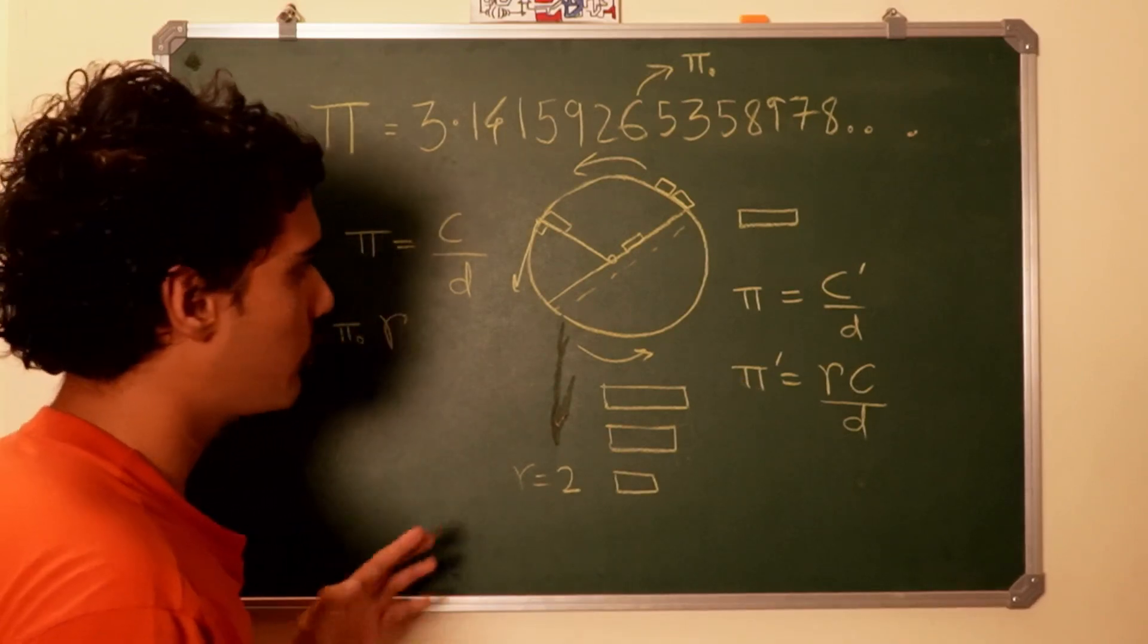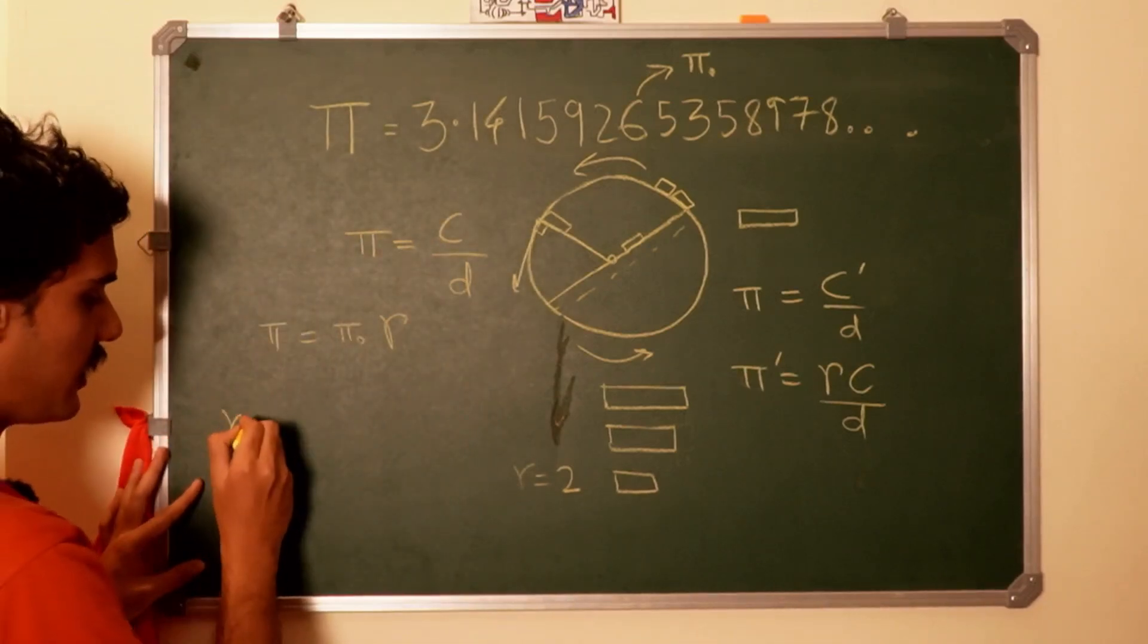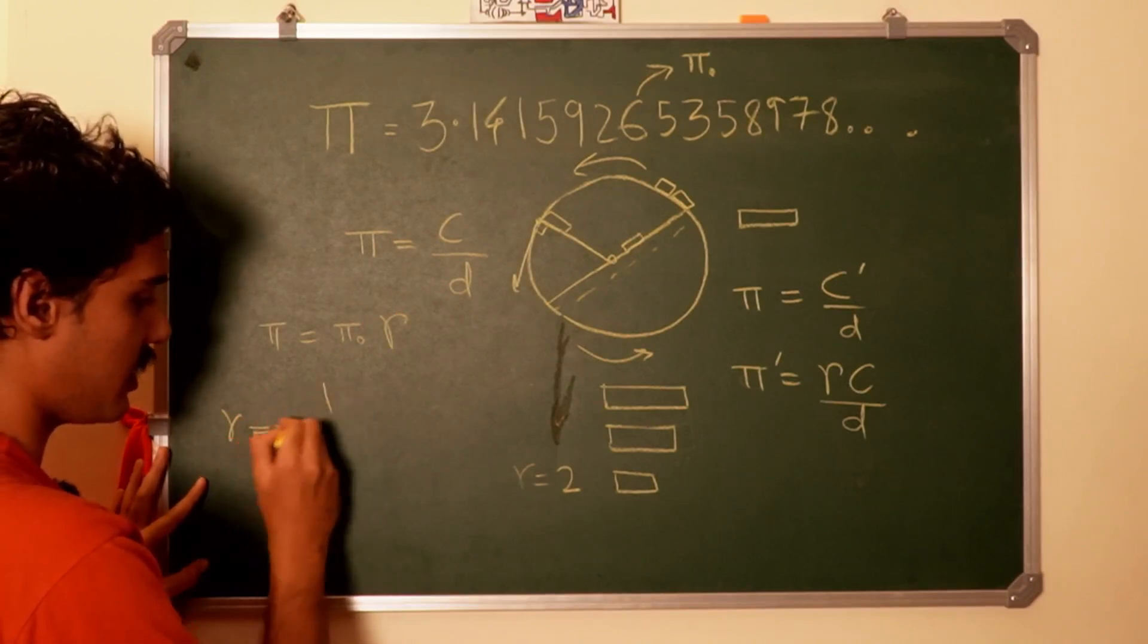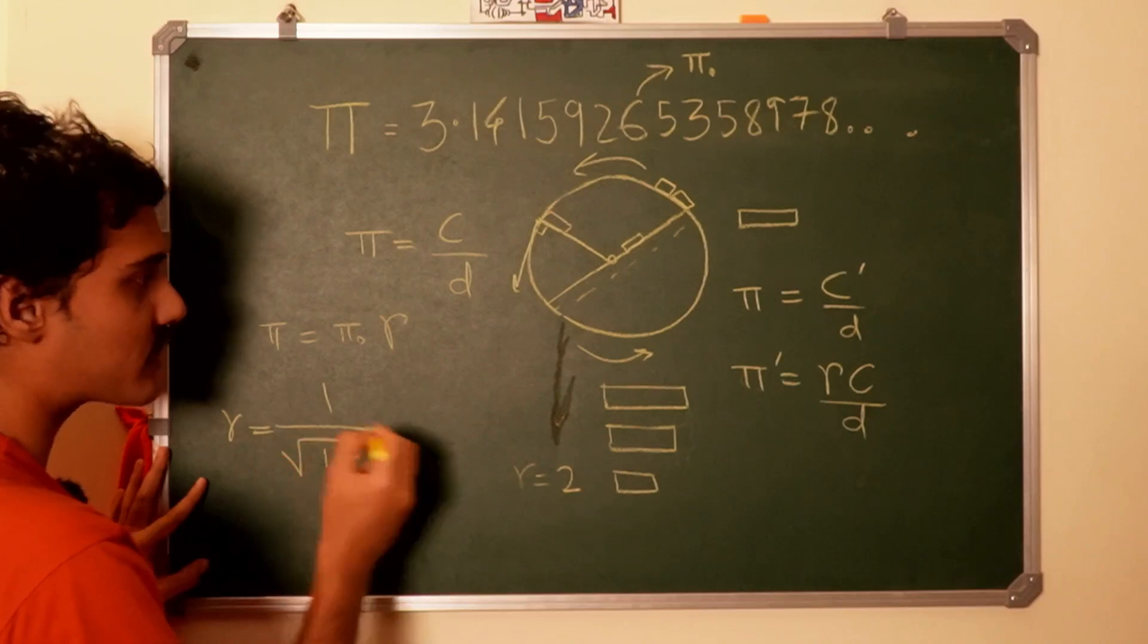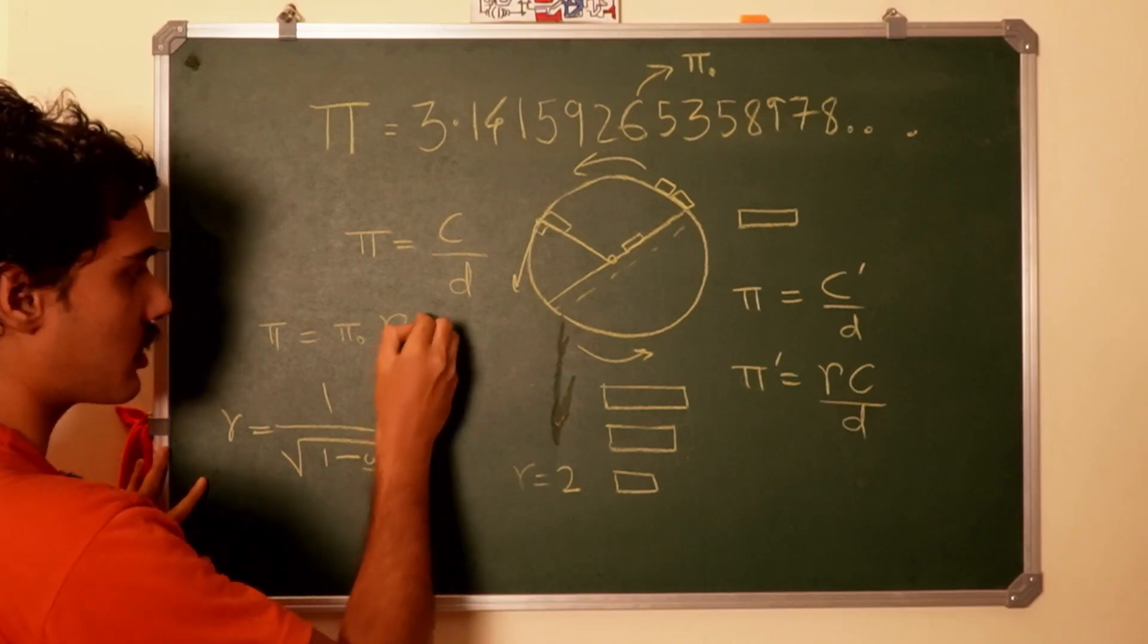And if you want you could put the gamma as a function of the angular speed omega, which is, let's say, 1 over 1 minus—now v squared. V is omega r, so omega squared r squared by c squared.